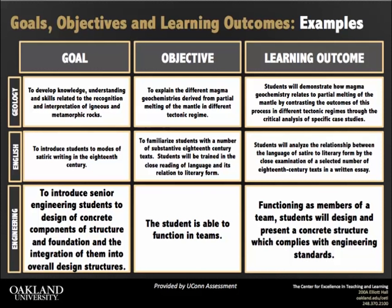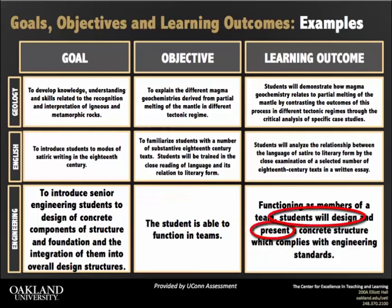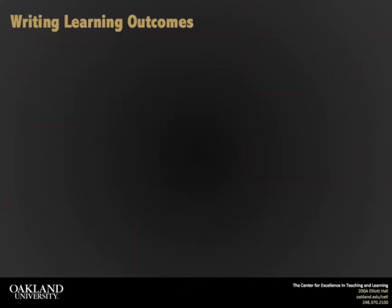Notice that each column is progressively more concrete. The more specifically action-based the learning outcome, the more measurable and feasible it is for students, faculty, and administrators. The wording of your learning outcomes matters. Articulate what students will be able to do using action verbs, the content involved, and the context for using the content.